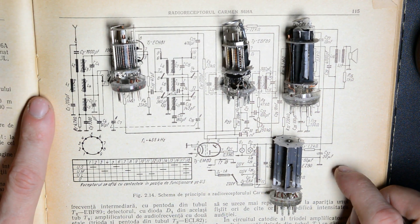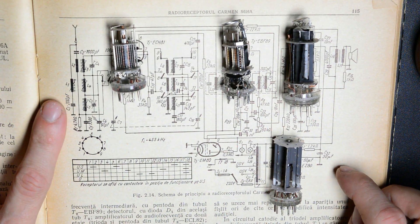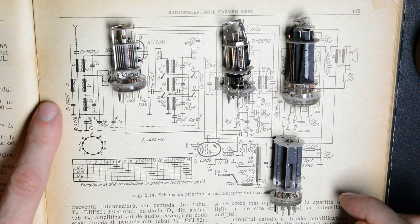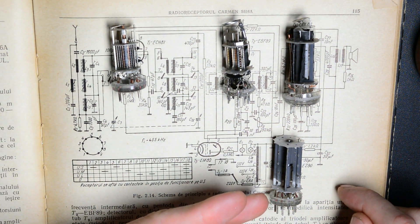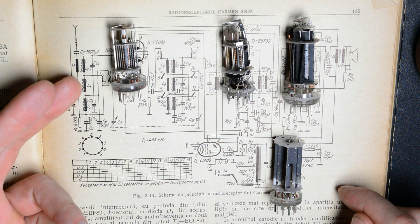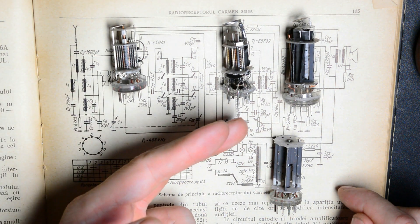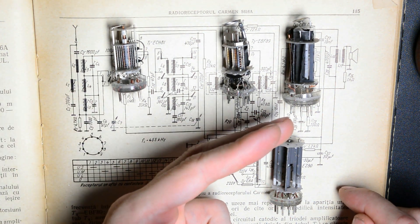Hello, and welcome to the final teardown of this series. Until now, we looked at the tubes responsible for rectifying the AC into DC, the tubes responsible for amplifying the radio signal, and then detecting it and amplifying the audio signal.